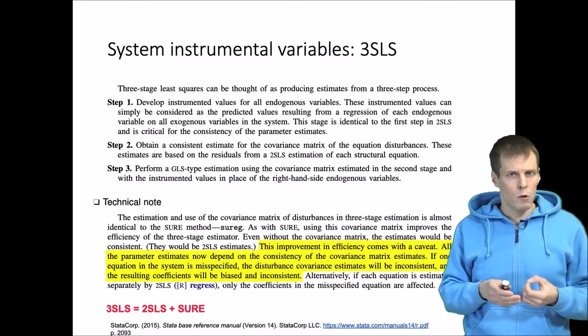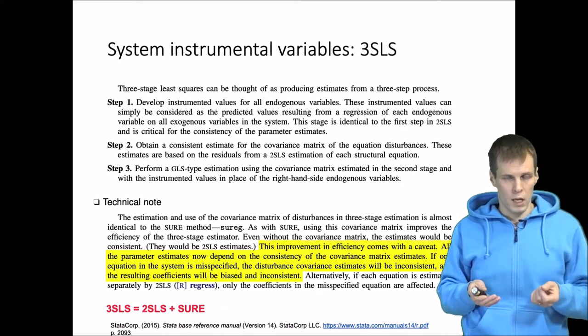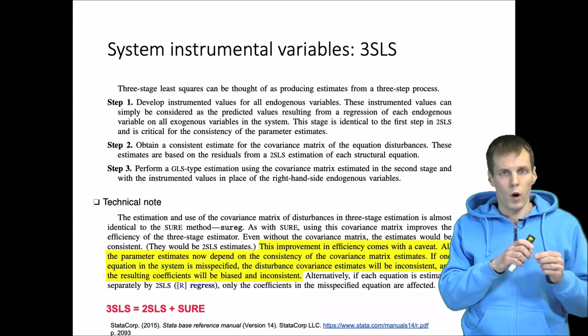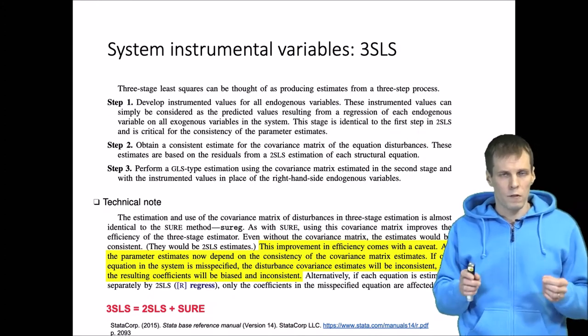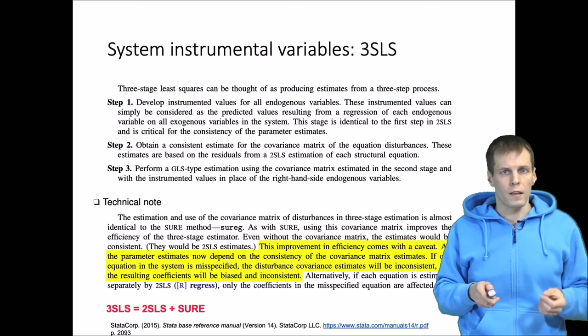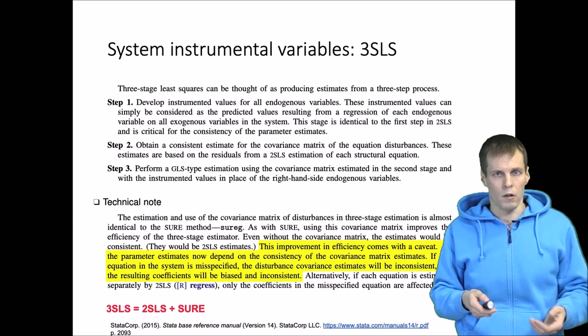This is one advantage with two-stage least squares and generally any other limited information techniques that estimate the model one piece at a time: misspecifications in other parts of the model will not affect the quality of the estimates in one particular part of estimates.